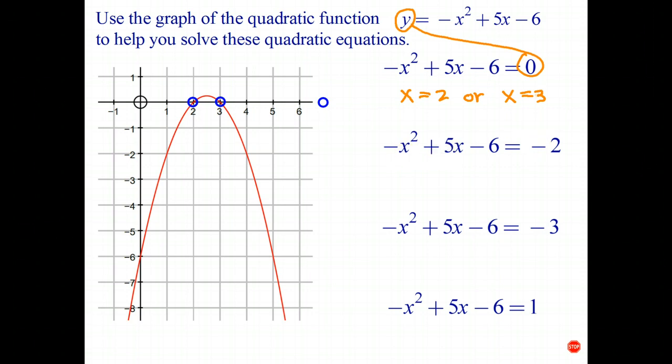What about this next equation? Well we're trying to find out where this graph, where this expression has a value of negative 2. Well again we're talking about where is the y coordinate equal to negative 2? Well there's y is negative 2 so that's one point and that's the second point just there. So y equals negative 2 when x equals 1 or when x equals 4.